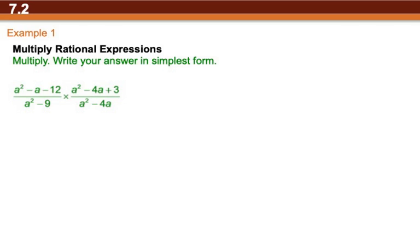So we start with the top left. We have a² - a - 12. It's a trinomial, so we need two numbers that multiply to -12 and also add to -1. Negative 4 and 3 will do that.